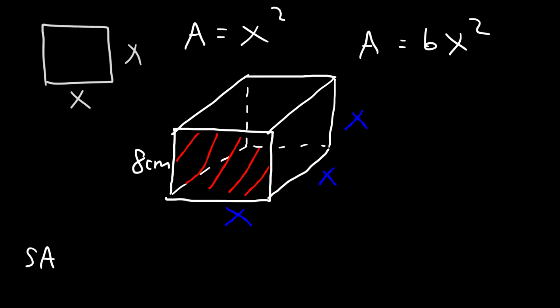The surface area is going to be 6 times 8 centimeters squared. 8 squared is 64. And 6 times 64 is 384. And it's going to be square centimeters.